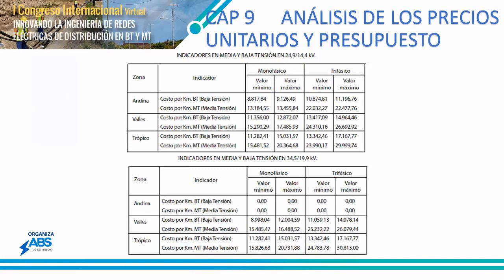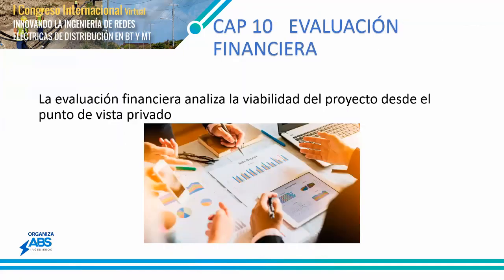Por ejemplo, en la zona andina, el valor máximo para una red trifásica es 22,500 dólares el kilómetro. Son indicadores que pueden variar, pero hacen una referencia muy interesante para estimar cuánto podría costarnos una red eléctrica de distribución en el área rural.